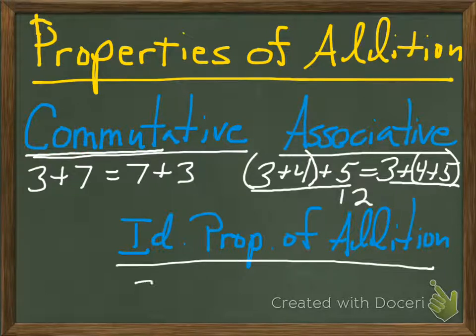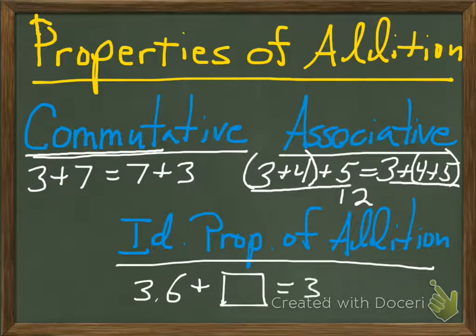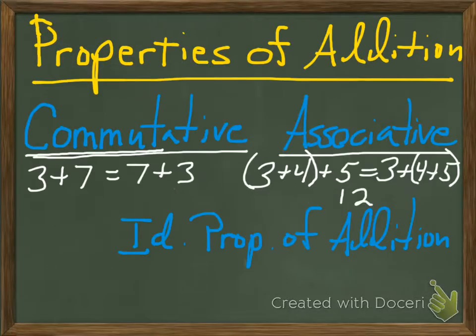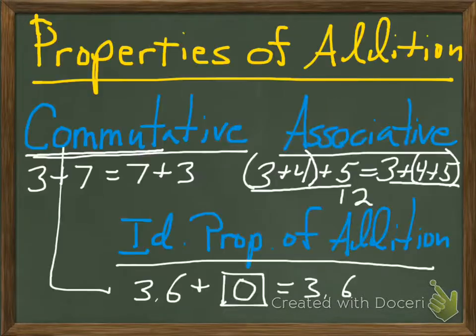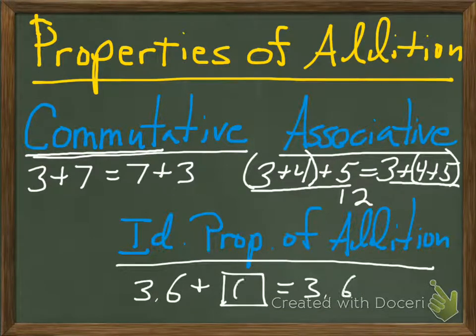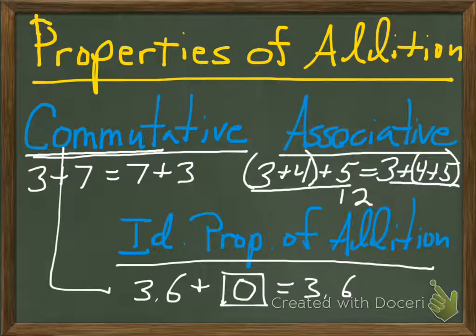Finally, we've got the identity property of addition. The identity property of addition is basically what number can we add to a number like 3.6 and not change it. Remember we talked about how that little happy box is probably the very first variable you ever saw when you were in probably kindergarten or first grade. The question is, what number can I put in there to make that true? What number can you add to 3.6 and still have 3.6? The only number that you can do that with in our math system is zero. Those are your three properties of addition: the commutative, the associative, and the identity property of addition.